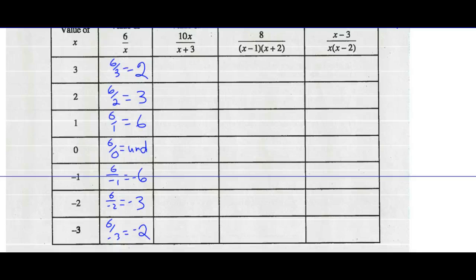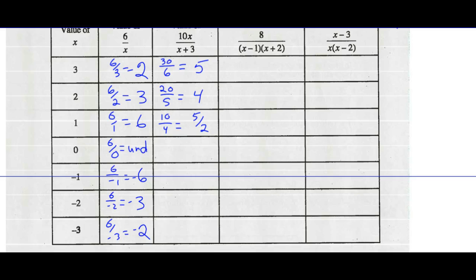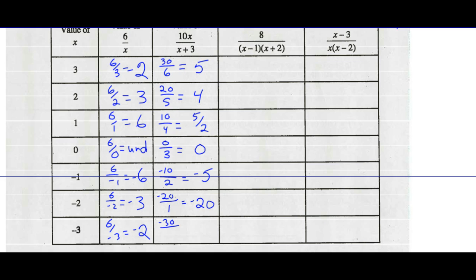Let's look at 10x over x plus 3. Substitute 3 in for x: 10 times 3 is 30, over 3 plus 3 which is 6. 30 divided by 6 is 5. 10 times 2 over 2 plus 3: 20 divided by 5 is 4. 10 times 1 over 1 plus 3: 10 divided by 4 is 5 halves. 10 times 0 is 0 over 0 plus 3 is 3. 0 divided by 3 is calculable — that's 0. 10 times negative 1 over negative 1 plus 3 gives negative 5. 10 times negative 2 over negative 2 plus 3 gives negative 20. And 10 times negative 3 over negative 3 plus 3, which is 0 — that's undefined.